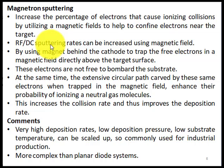Some important comments: magnetron sputtering gives very high deposition rates, low deposition pressure, and low substrate temperature. It can be scaled up, making it a commonly used technique for industrial production. However, it is more complex than planar diode systems.